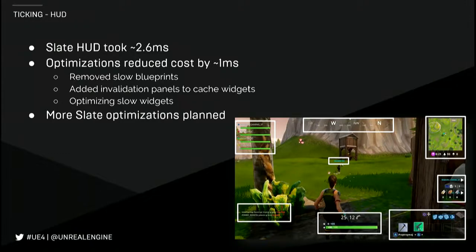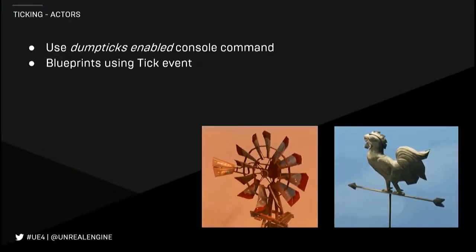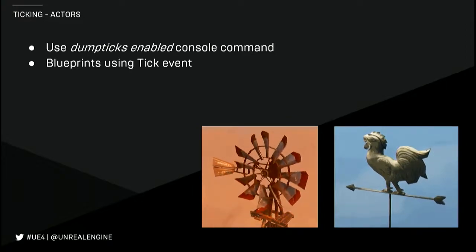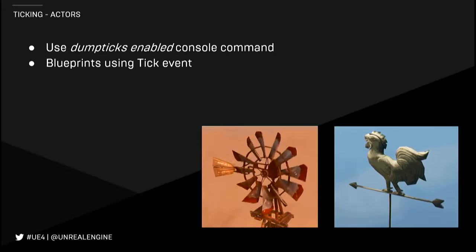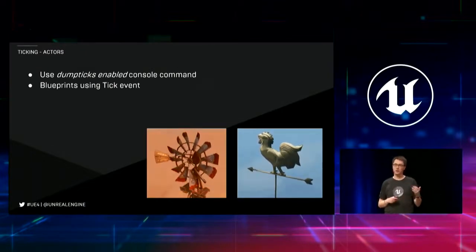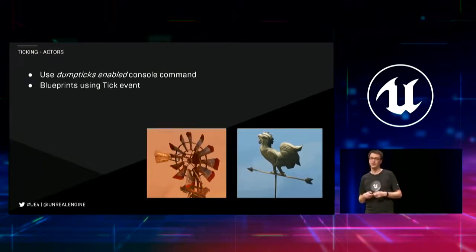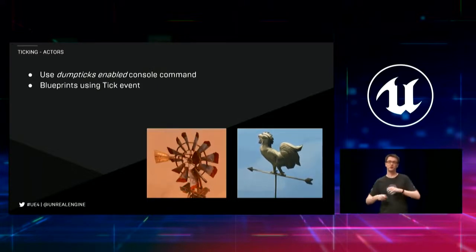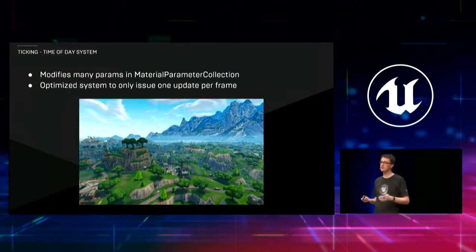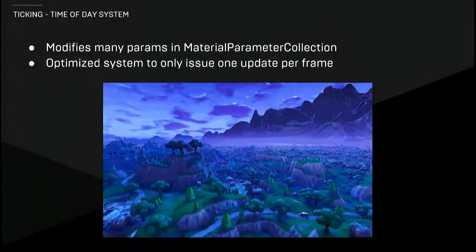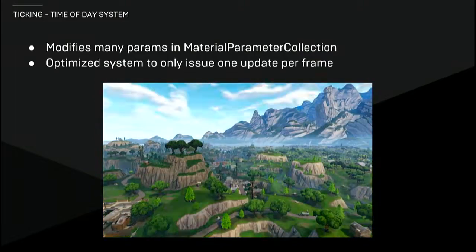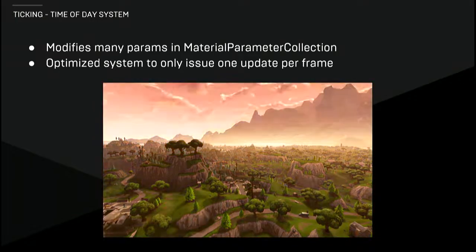One useful console command when profiling a game is dump ticks enabled. This will list out all of the tick functions that are currently scheduled every frame, which makes for fun reading. You can often spot things that maybe shouldn't be happening every frame on the platform you're on. We found lots of weather vanes gently moving in the breeze and cool creaking windmills. For some of these things, we made them based on significance or based on platform — we might not do them, or we might find a faster way to implement the logic. We try to work closely with our level designers, since a lot of this adds personality. Another system that runs every frame is our time of day system. We optimized it so that we only send one command to the render thread regardless of how many parameters you change, rather than one command per parameter.